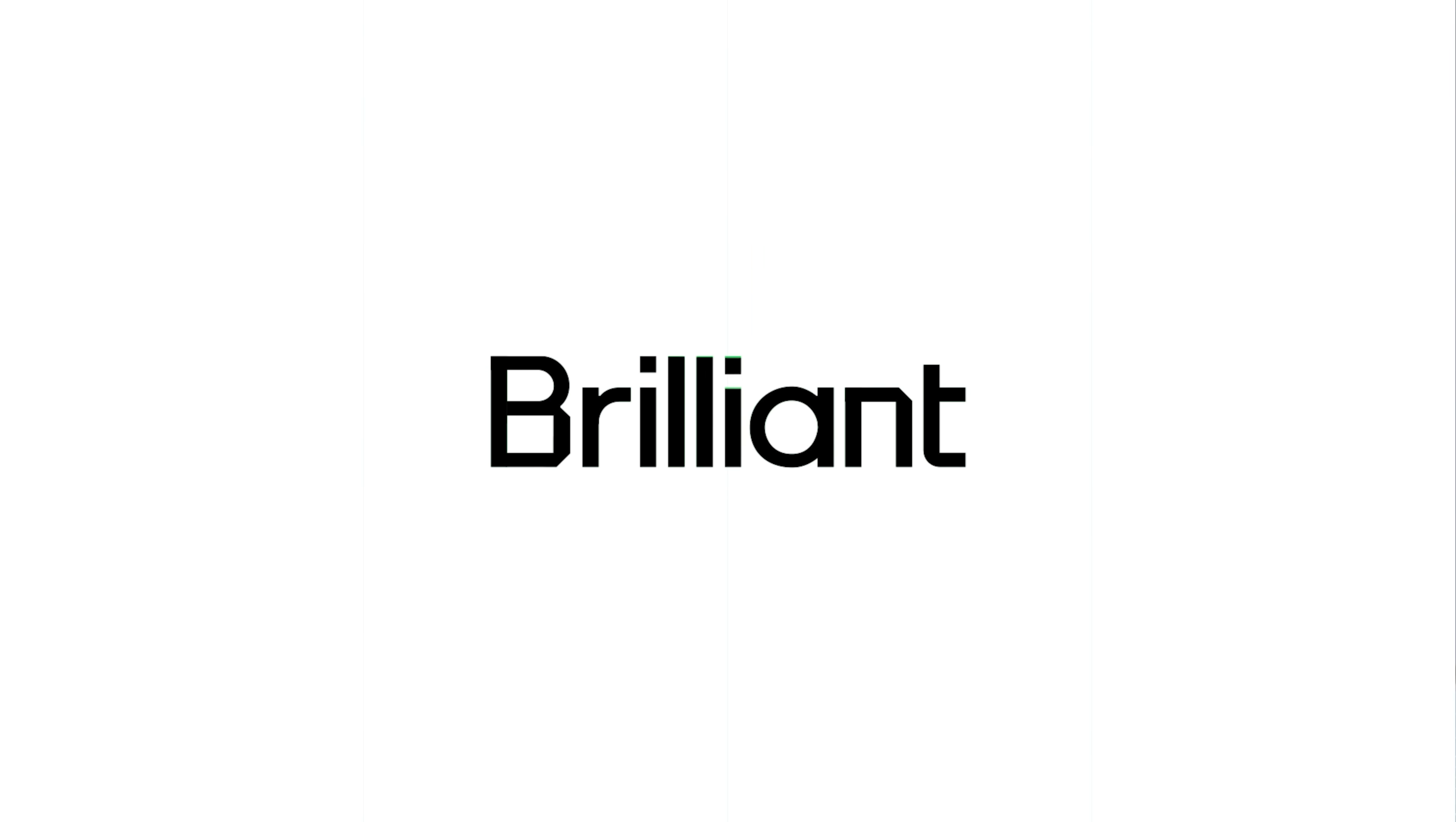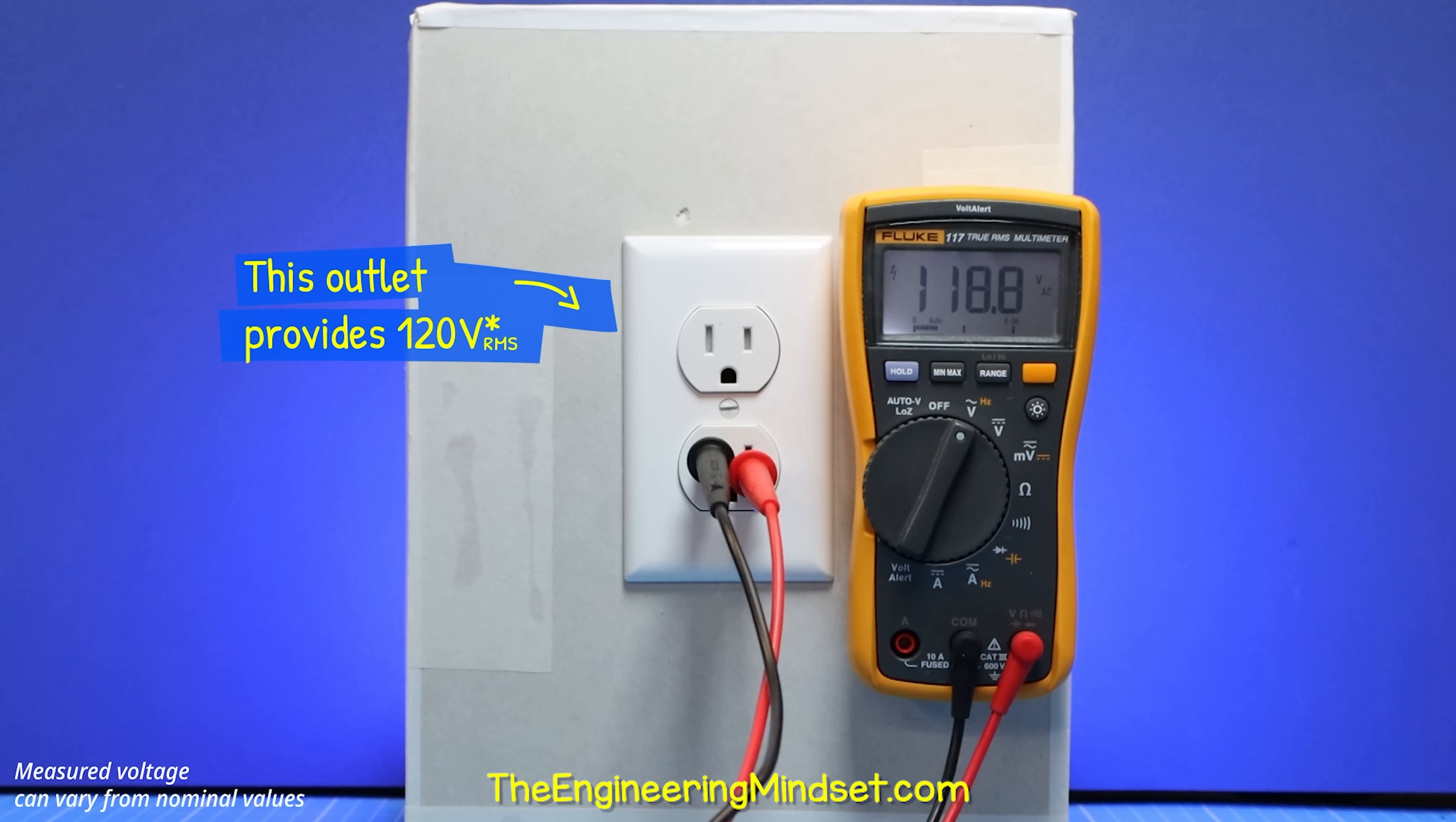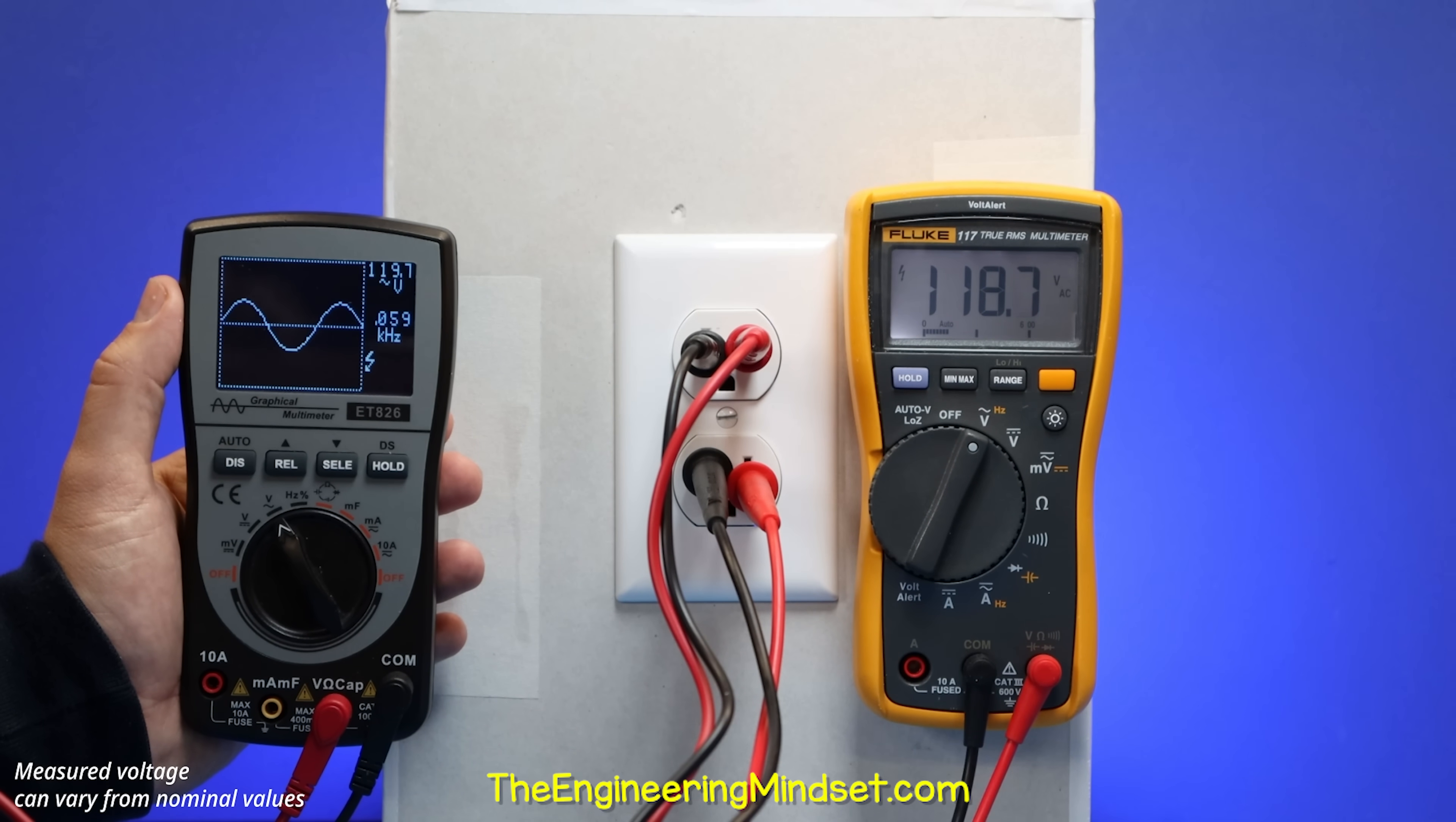Sponsored by Brilliant. This outlet provides 120 volts alternating current. If we connect an oscilloscope, we find a single-phase 60 hertz sine wave.